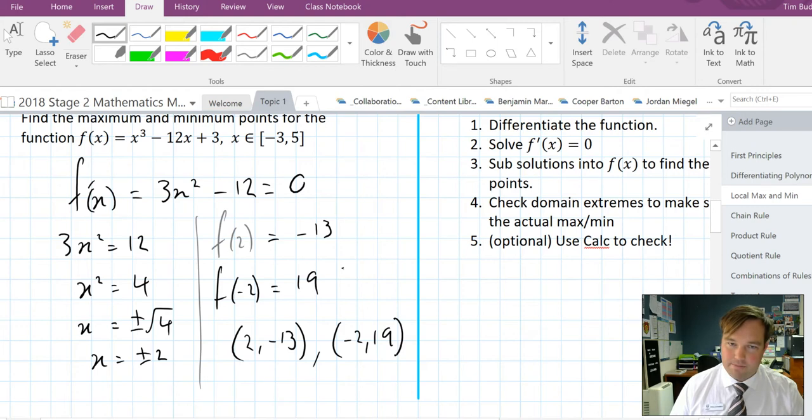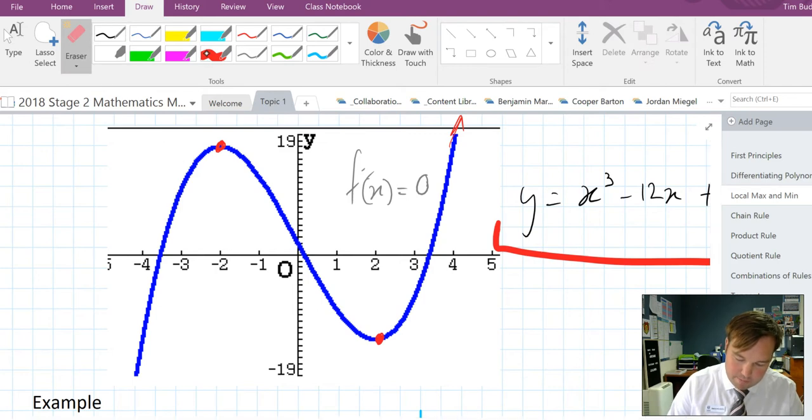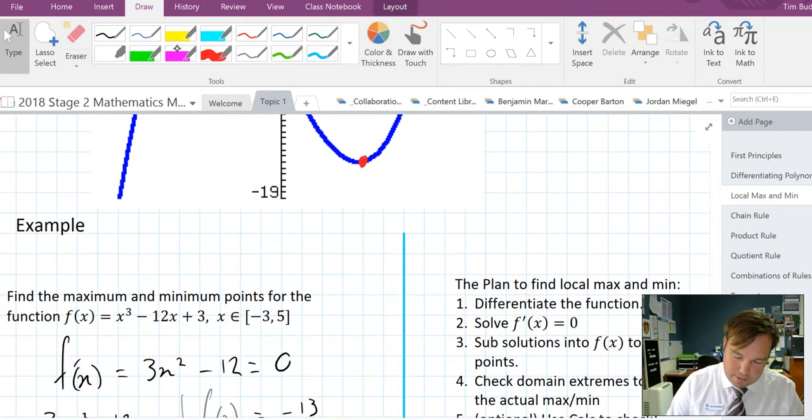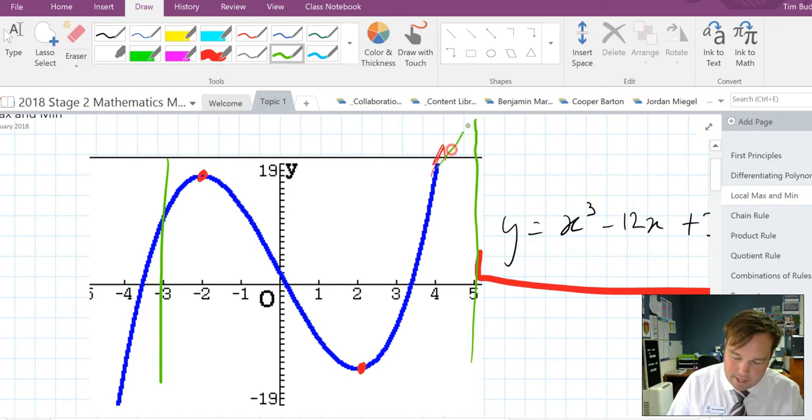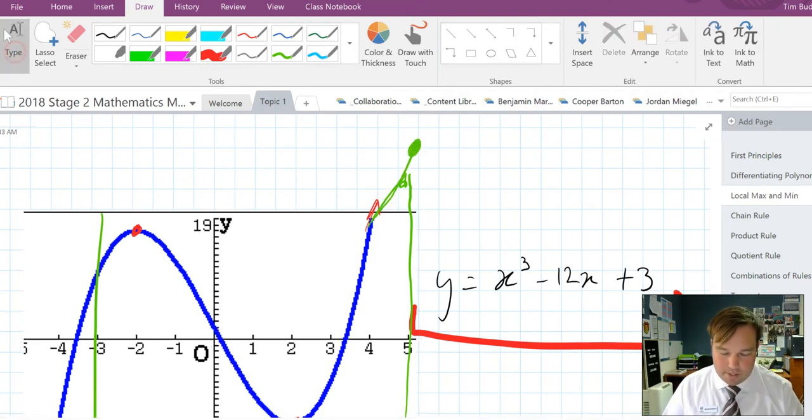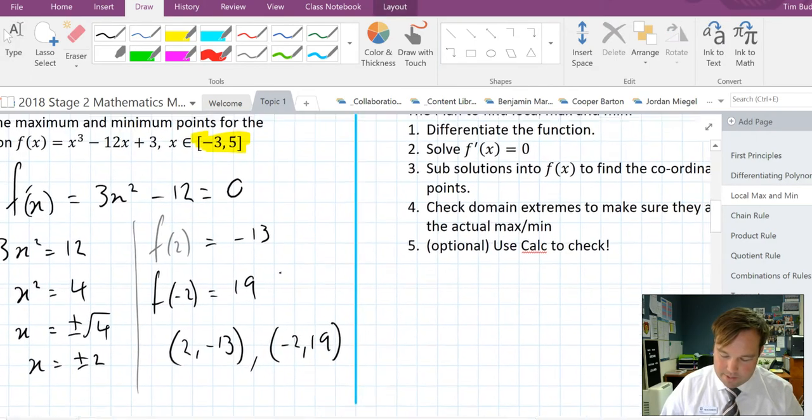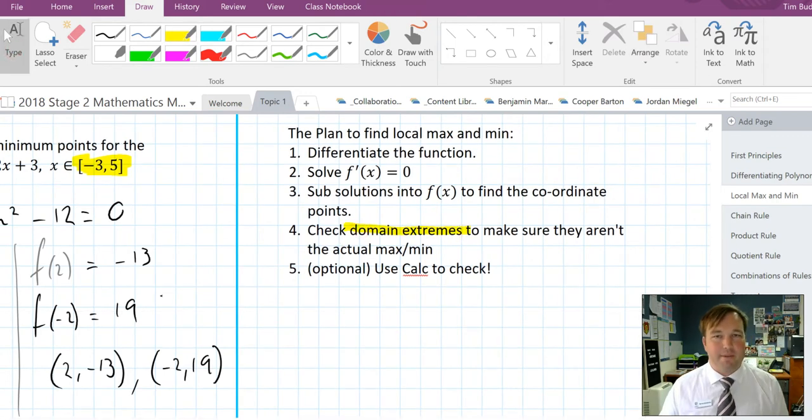So this is an examiner's trap for you. Those two there are the coordinates of the turning points. They are those red dots that we started with. But that doesn't necessarily mean they're the max and min within the domain. And I'll show you why. The domain is restricted from minus 3 to positive 5. Minus 3 to positive 5 looks like this. And when we see that, you can see that up here this line is going to meet somewhere much higher. So what we typically do is, just to make sure the examiners aren't trying to trick us, is if they've given us a restricted domain, we check the domain extremes to make sure they aren't the actual max and min within the domain.